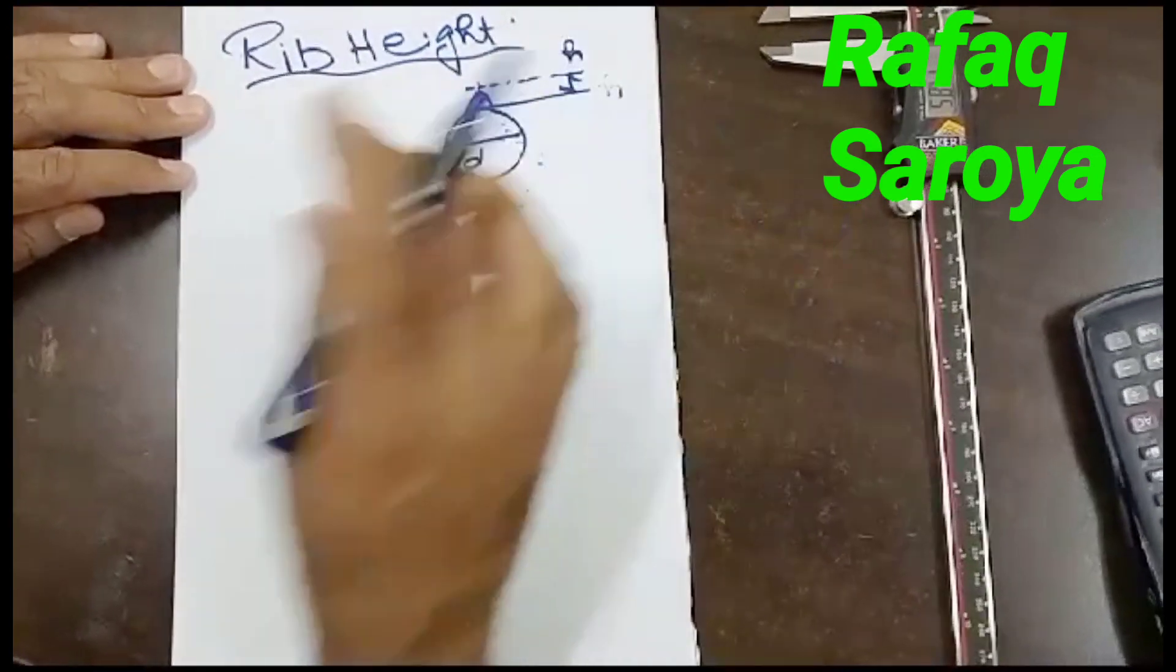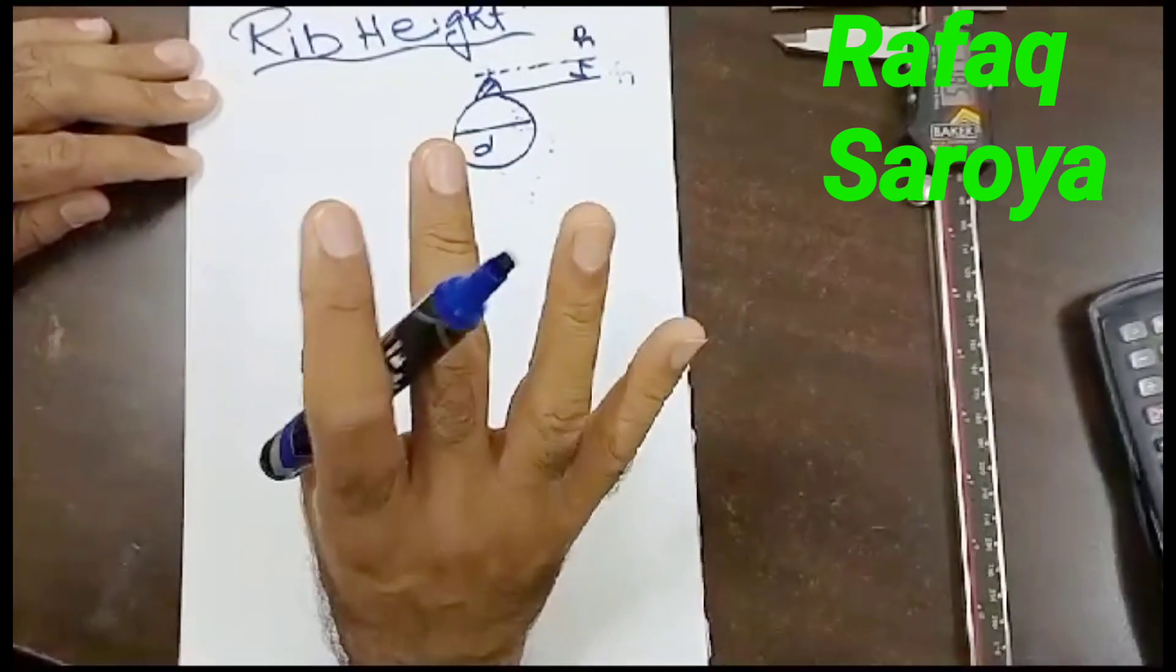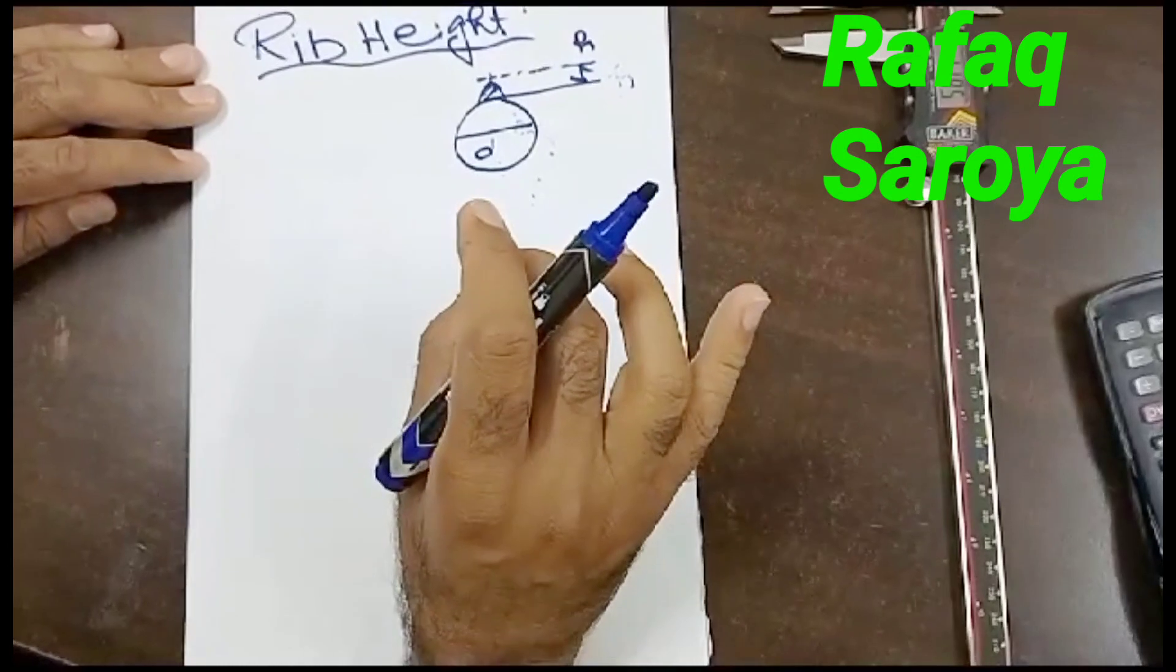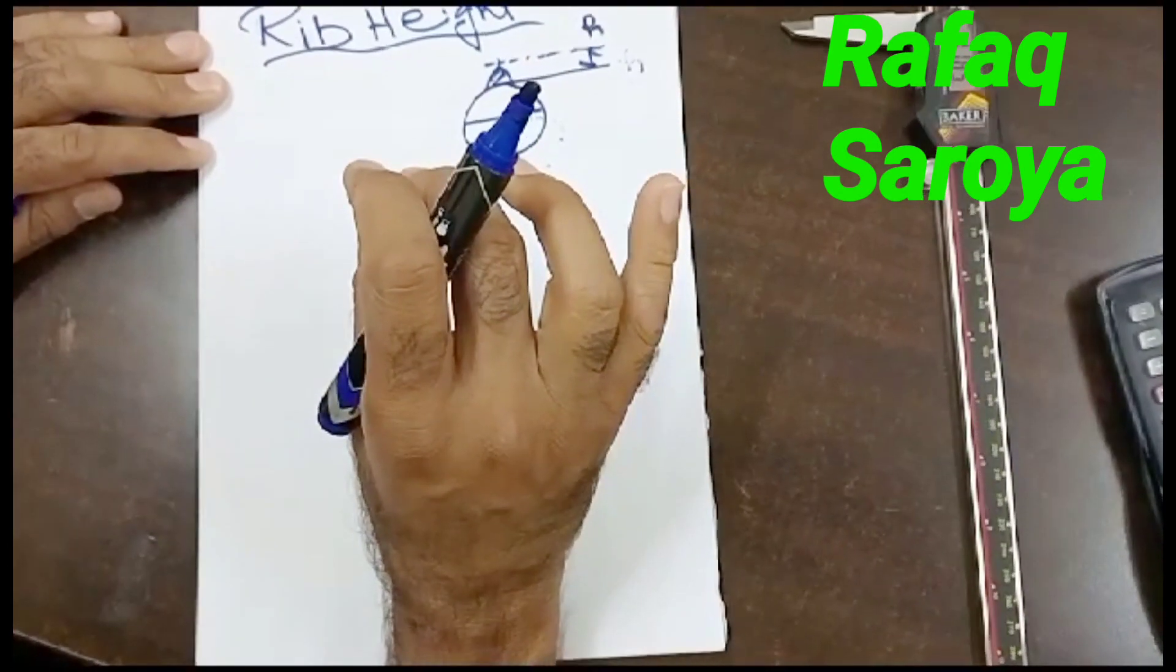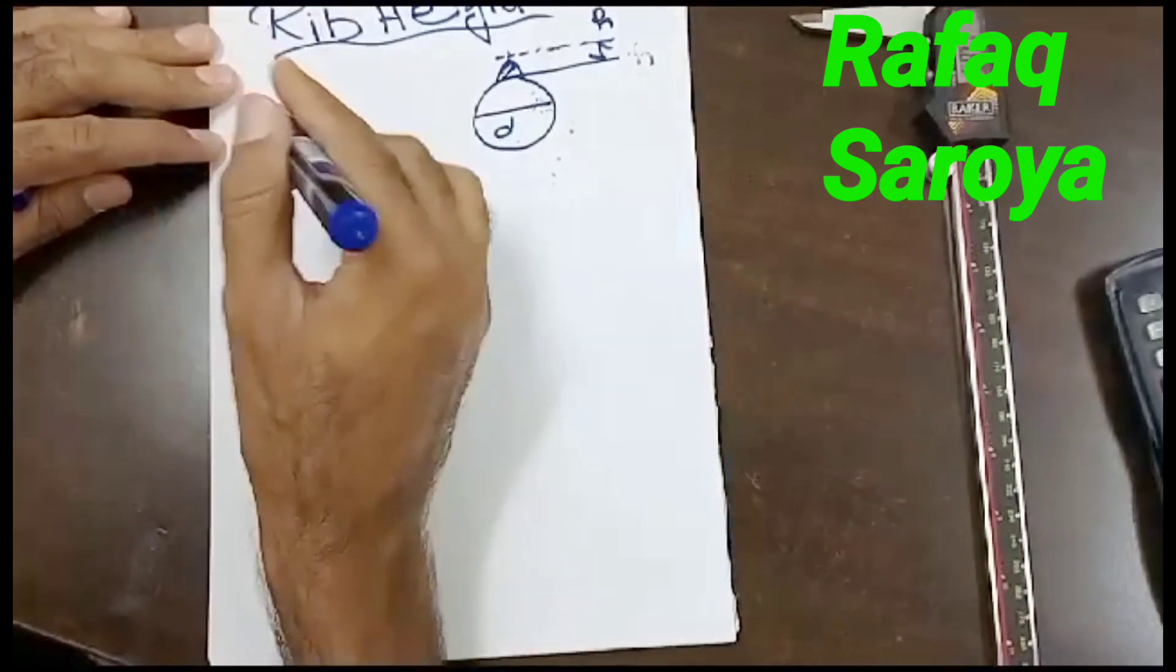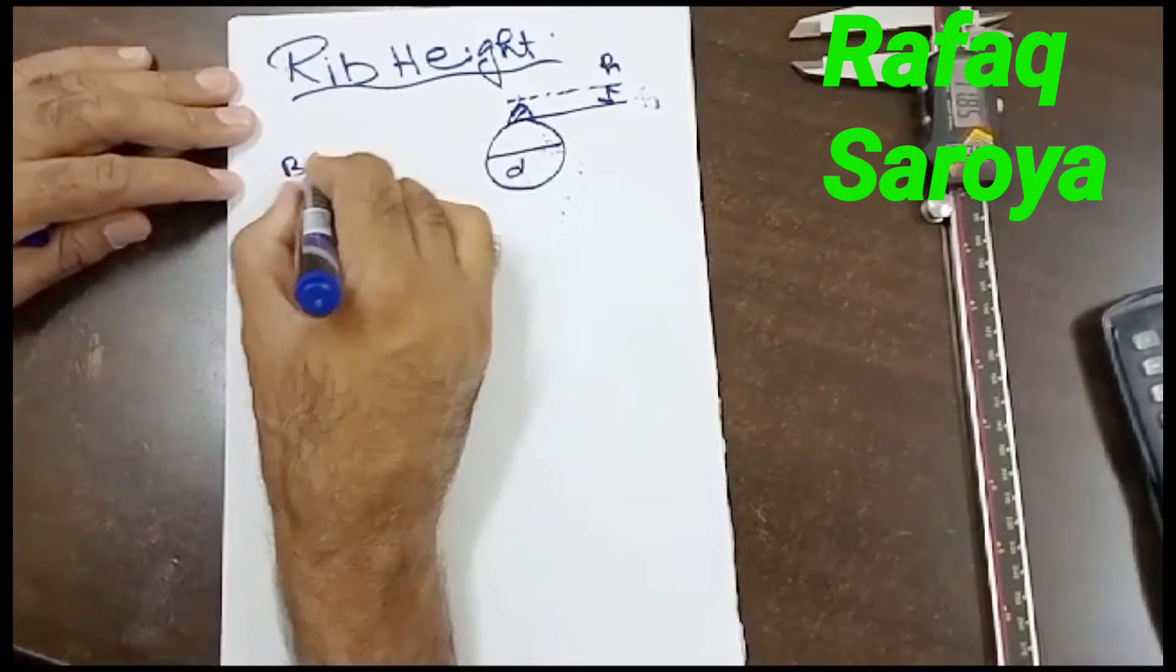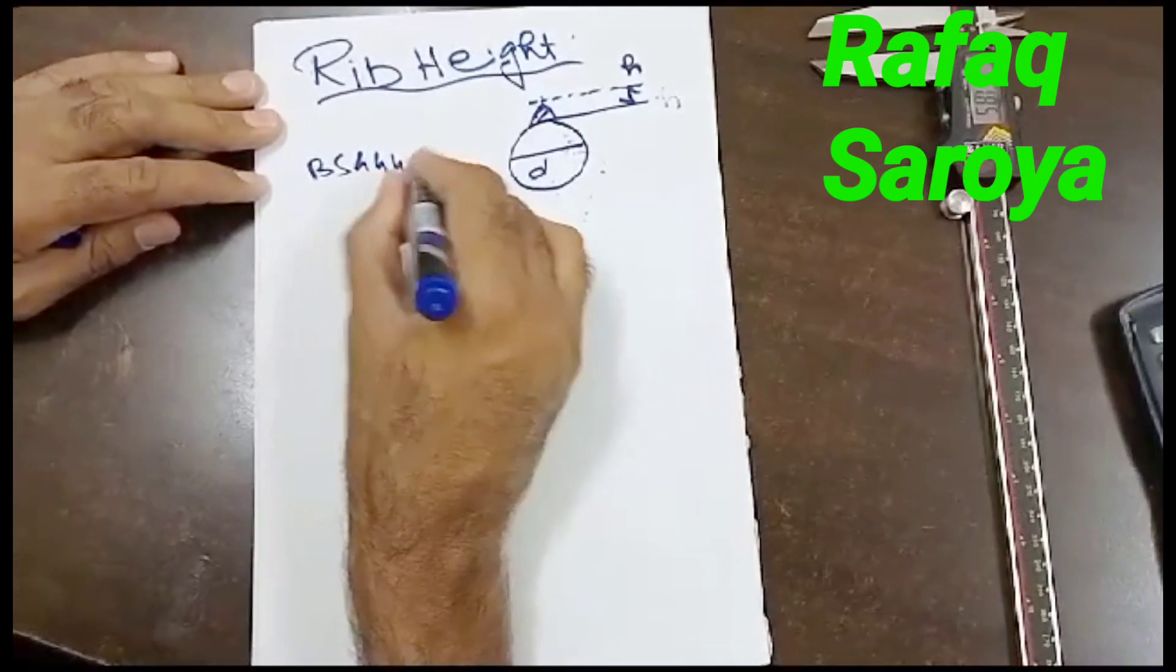It will vary from diameter to diameter. And its range is given over here with BS 4449. The amount of the height of the rib is also given by...